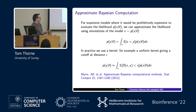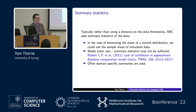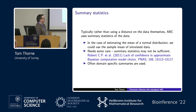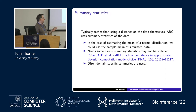In practice, what we do is use summary statistics of the data rather than distances between raw data. A simple example: for a normal distribution, if you're trying to estimate the mean, you could compare the mean of simulated data to the mean of the observed data. There are pitfalls here though — it requires care in choosing summary statistics. Using the median or maximum instead of the mean is not actually sufficient for estimating the mean of a normal distribution, so inference would be biased and not converge to the true posterior.